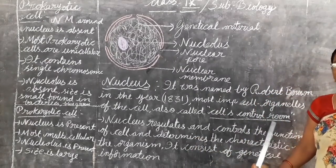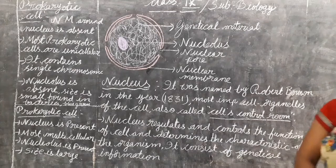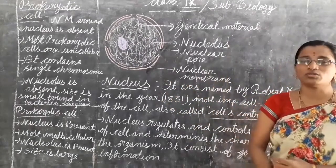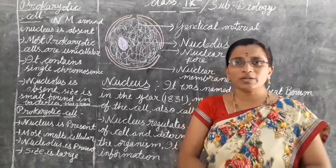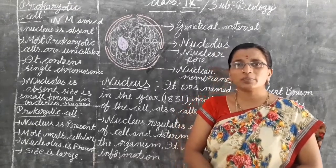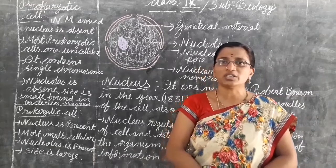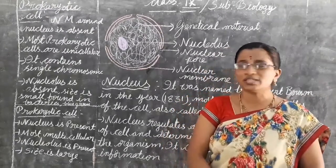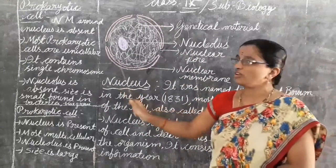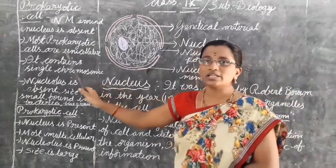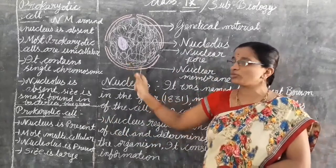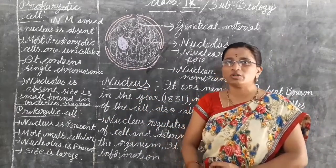The nucleus consists of genetic material — thread-like structures. Through these genetic materials, the genes present in the parents are transferred to their offspring. Based on the presence and absence of the nucleus, cells are of two types: prokaryotic cells and eukaryotic cells. In prokaryotic cells, the nuclear membrane is absent. They consist of only a single chromosome.